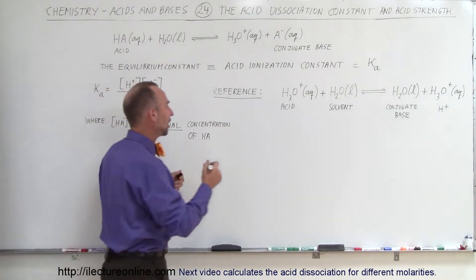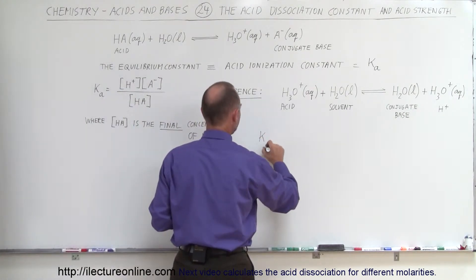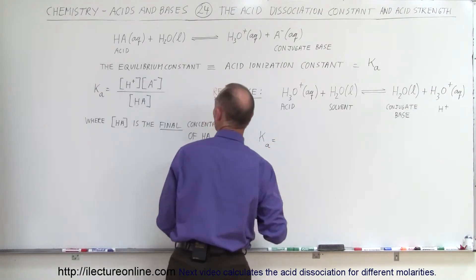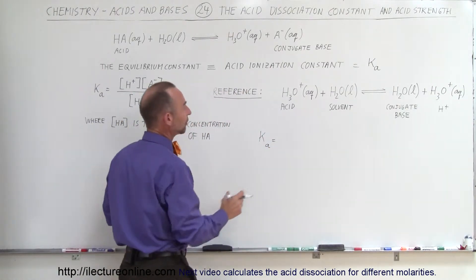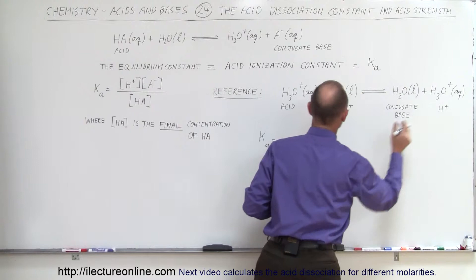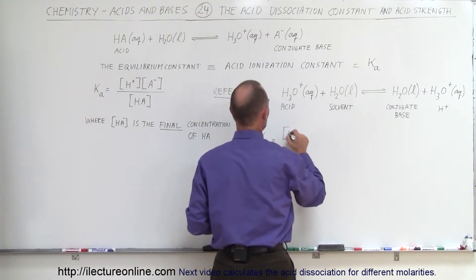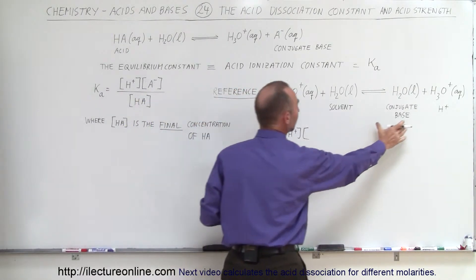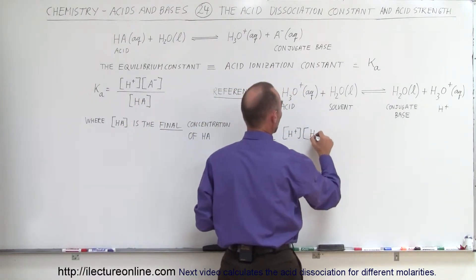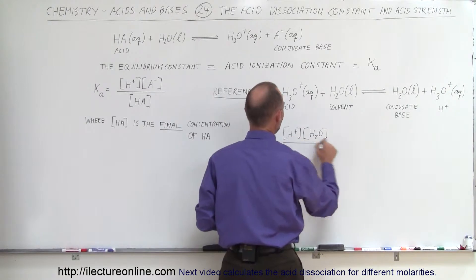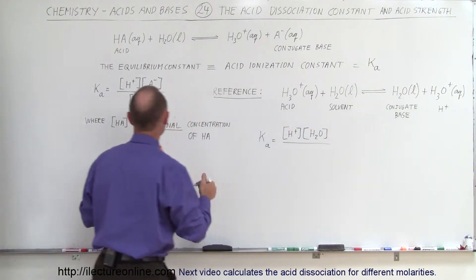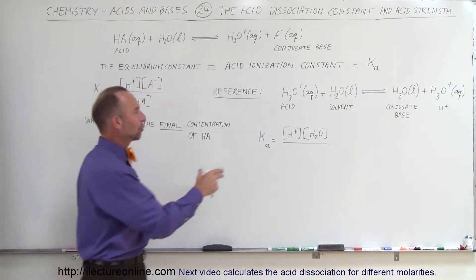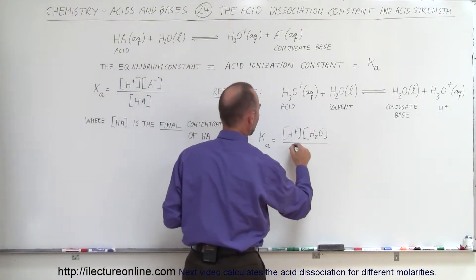So let's try to do that. So in this case the Ka of water, and I like to use a small a for that, I think that's the convention, is equal to the concentration of the hydrogen ions, so that would be the concentration of the hydrogen ion, times the concentration of the conjugate base which would be the concentration of the water, divided by the concentration, the final concentration of the acid. Now the acid, of course, would be the concentration of the hydronium ion.